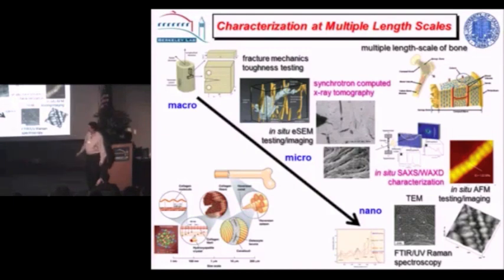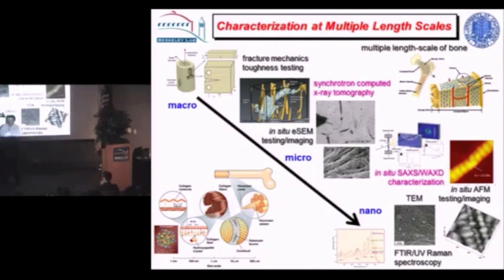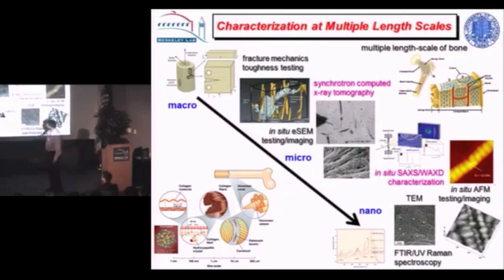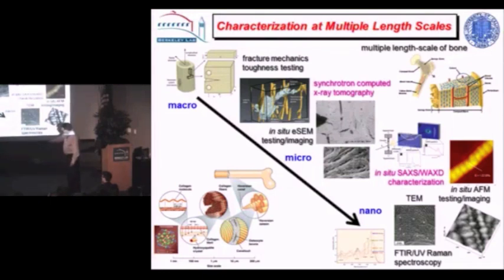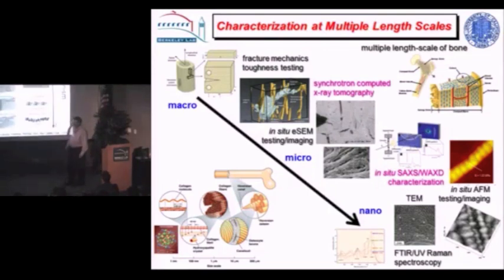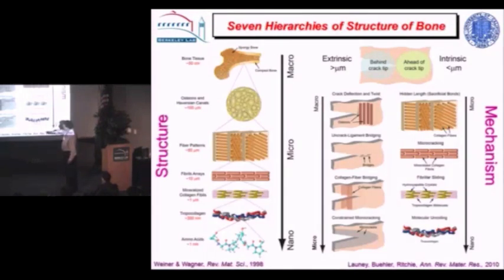Bone has a multiple length-scale hierarchical structure — all the way from peptide chains twisted as collagen molecules, twisted into collagen fibrils with minerals deposited on them at a very regular spacing. The fibrils are twisted into fibers, and then we have a mat at the micron scale. Bone remodels at the hundreds-of-micron scale by osteonal structures — channels where blood vessels sit — and as the bone grows these osteons provide the interface between new bone and old bone.